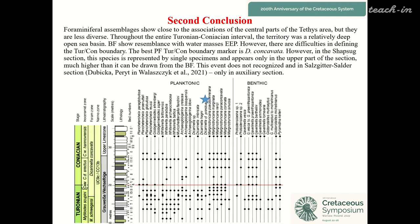The best planktonic foraminiferal Turonian-Coniacian boundary marker is Dicarinella concavata. However, in the Shapsuk section this species is represented by single specimens and appears only in the upper part of the section. This event is also not recognized in the Salzgitter-Salder GSSP section, only in the auxiliary section.